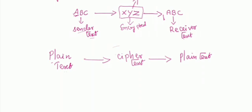In between, the plain text is changed into cipher text based upon some algorithm. Based upon that algorithm only, the plain text is converted into cipher text, and again the cipher text is converted back into plain text. This is the way the information is encrypted.